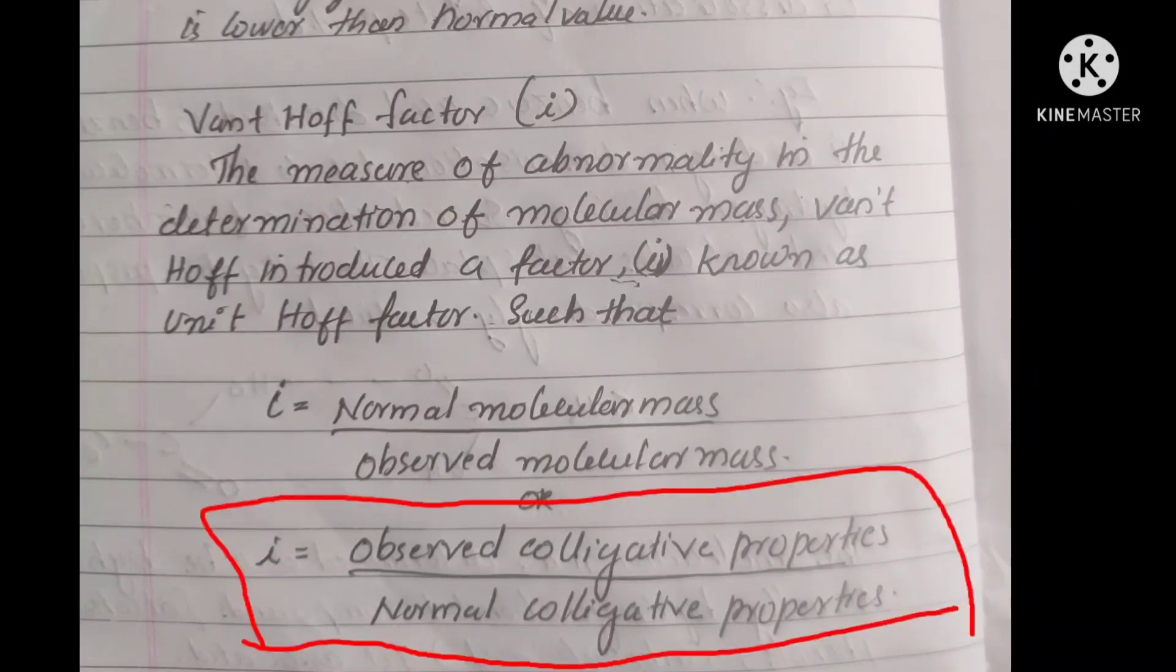The Van't Hoff factor is defined as the ratio of the observed value of a colligative property of a specific solution to the normal expected value for that colligative property under the same condition. That is, Van't Hoff factor i equals observed colligative property divided by normal colligative properties.